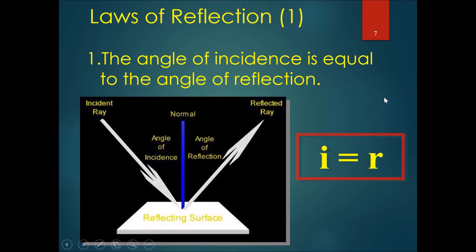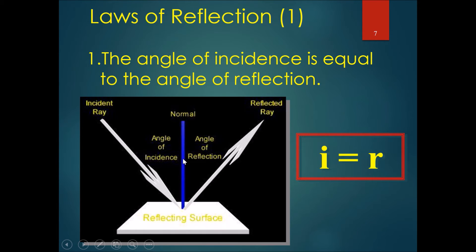The first law of reflection states that the angle of incidence is equal to the angle of reflection. This is the simplest formula in O-level physics. Light comes in at an angle to a reflecting surface, and the angle at which the incident ray hits will be exactly the same angle it reflects out. So I = R — if incidence is 30 degrees, reflection is also 30 degrees.